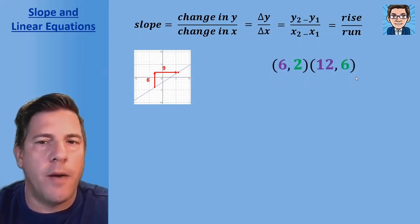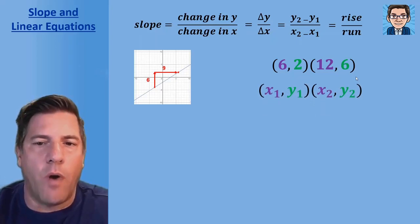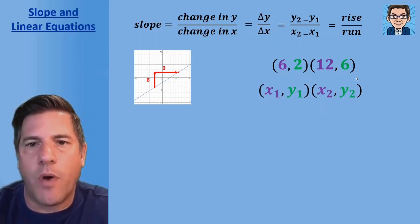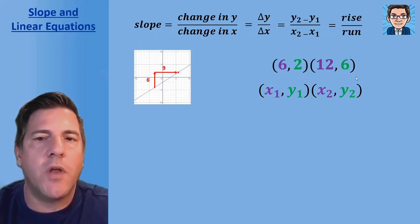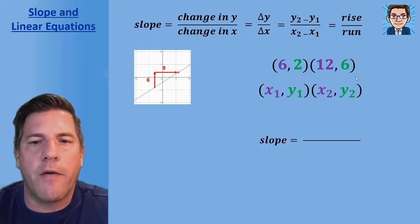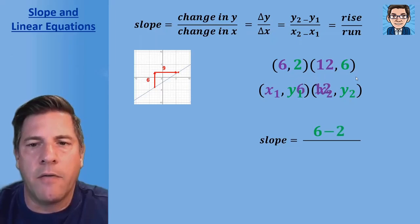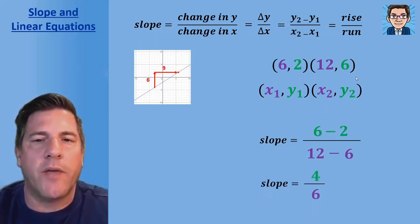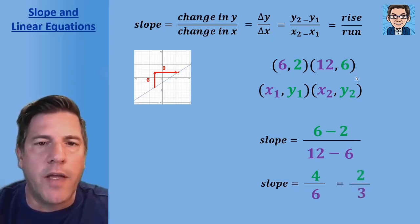When we have two points, label the first one x1 and y1, and the second x2 and y2. To find the slope of the line through those two points, the numerator is the difference in the y's and the denominator is the difference in the x's. We subtract those out and get four over six, which reduces to two over three.